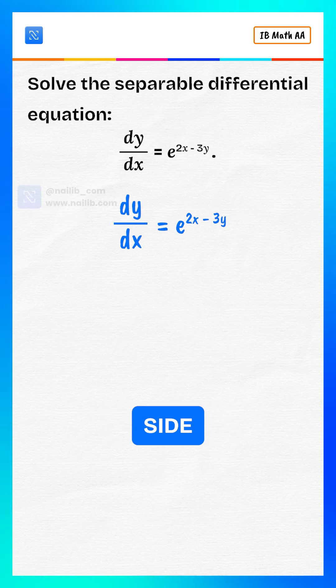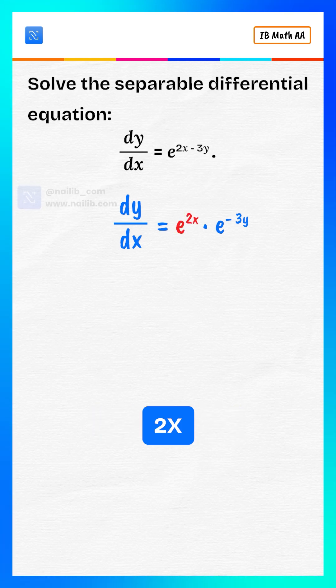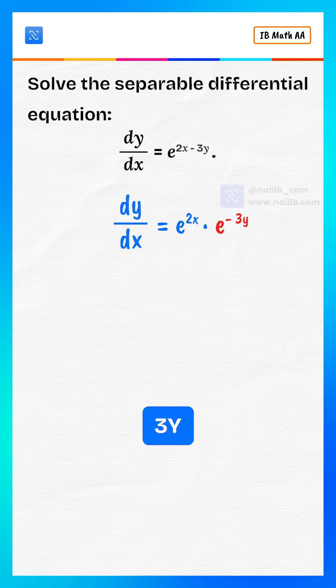First, rewrite the right side. e to the power of 2x minus 3y can be split as e to the power of 2x multiply by e to the power of minus 3y.